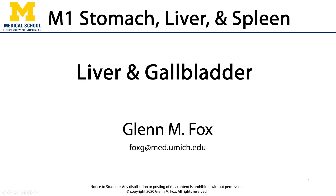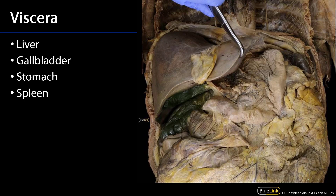Hi, let's talk about the structures of the liver and the gallbladder. Here we're looking at an anterior view of the abdominal cavity. We can see the diaphragm separating the abdominal cavity from the thoracic cavity. The liver is being retracted up and away, giving us a view of several of the main targets of our investigation in this session.